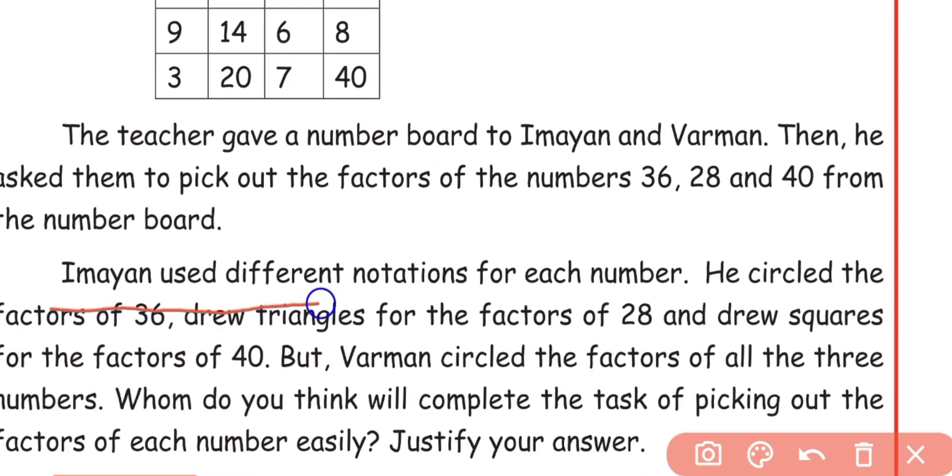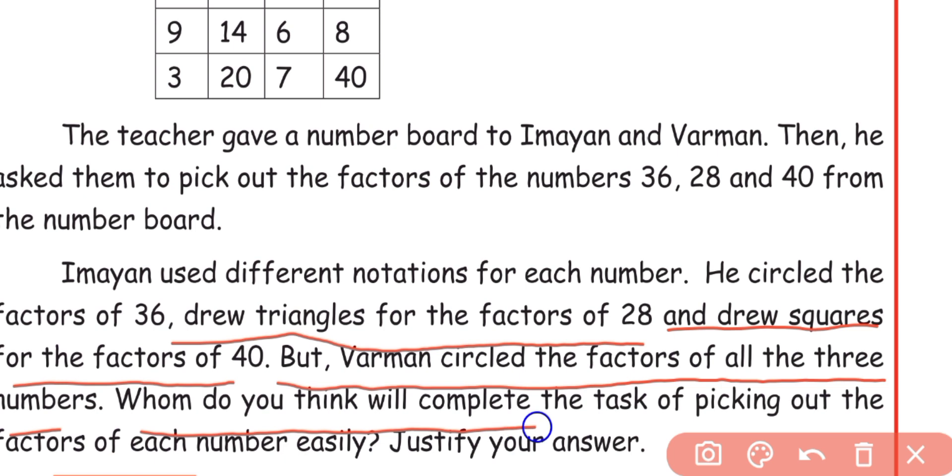Imayan used different notations for each number. He circled the factors of 36, drew triangles for the factors of 28 and drew squares for the factors of 40. But Varman circled the factors of all the three numbers. Whom do you think will complete the task of picking out the factors of each number easily? Justify your answer.